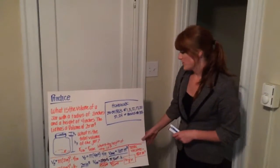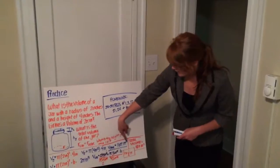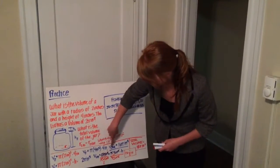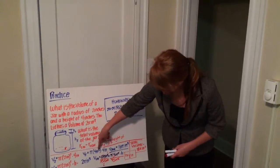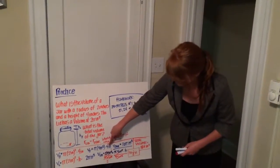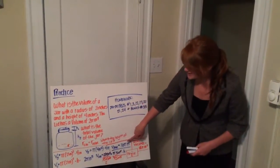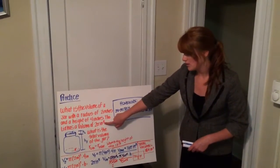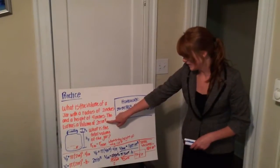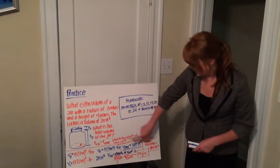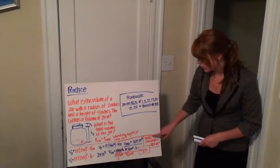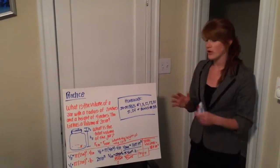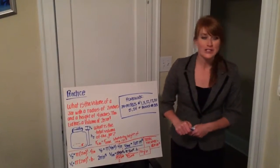So our final volume equation for the jar: pi times 4 inches squared times 4 inches — the height — gives us 16 pi inches cubed. We add that to 2 pi inches cubed from the lid. With our lid and jar together, our total volume is 18 pi inches cubed — inches cubed, our volume in three dimensions. Do you guys have any questions?